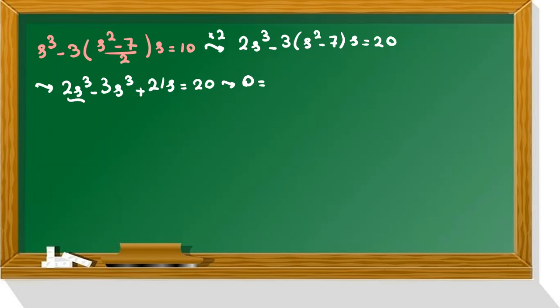Now if you take all things to right-hand side, we get s cubed minus 21s plus 20 equal to 0.